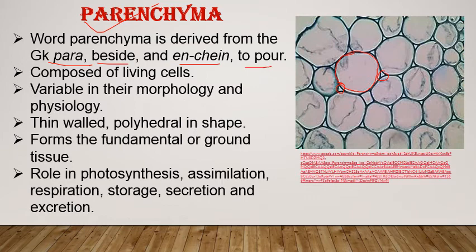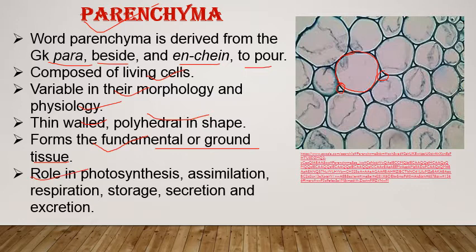Parenchyma is made of living thin-walled cells. Morphologically, cells are polyhedral in shape — they may be spherical, oval, or polygonal. Mostly, parenchyma makes up the fundamental or ground tissue. It plays an important role in photosynthesis, assimilation, respiration, storage, secretion, and excretion, making it very important in various physiological and metabolic activities.